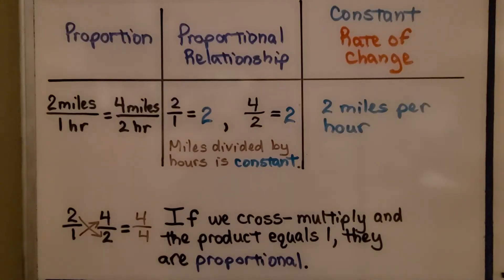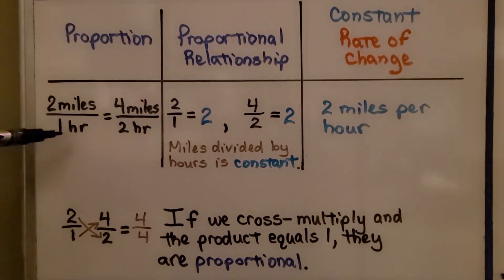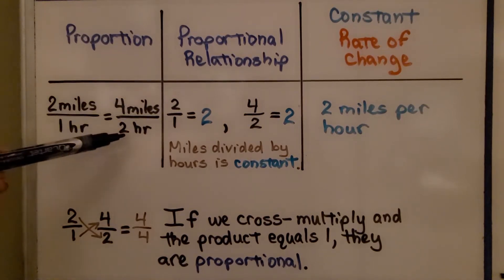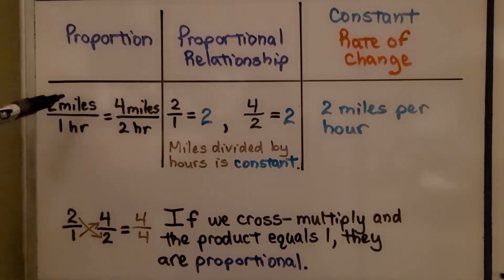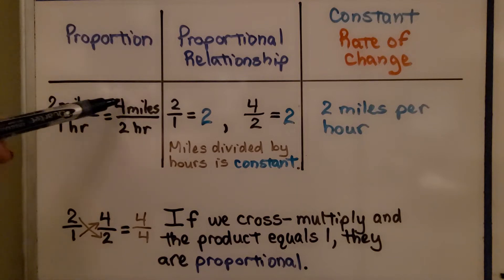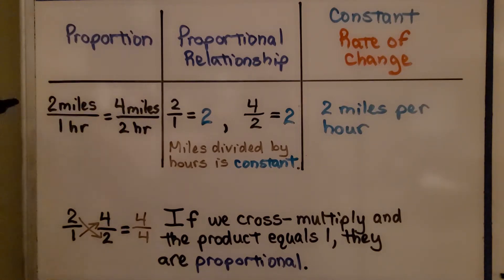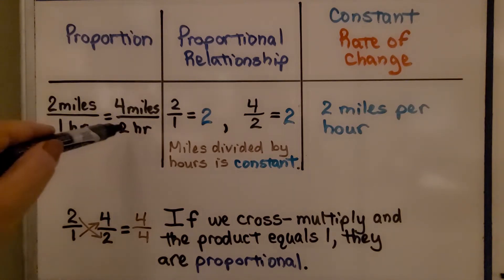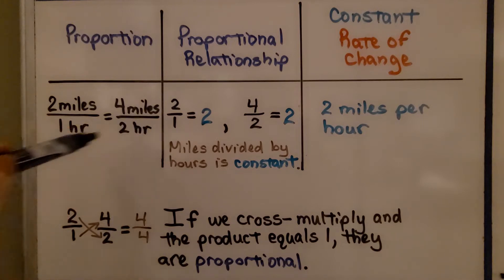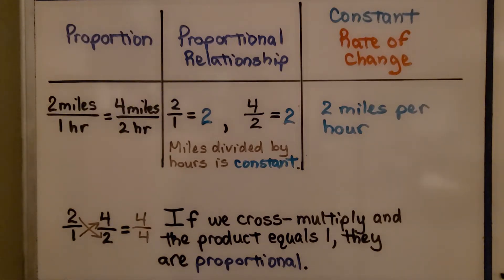Let's completely understand this. This is a proportion: two miles in one hour equals four miles in two hours. We doubled the two miles to get four, and doubled the one to get two — they're in proportion. If we cross multiply, two times two equals four, and one times four equals four. We have the same product, so we know they're in proportion.